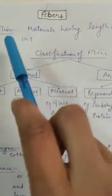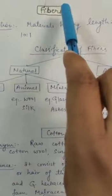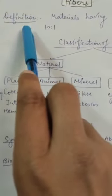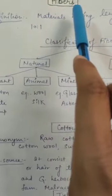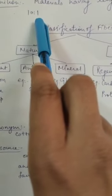Hello everyone, I am going to discuss the topic fibers. First of all, what are fibers? Fibers are materials having length and diameter ratio around 10:1, meaning the material whose length is 10 times its diameter. Now, classification of fibers - fibers are of two types: first one natural fibers, second one